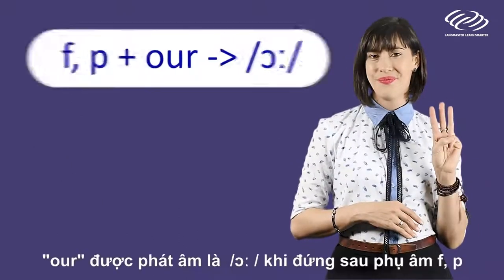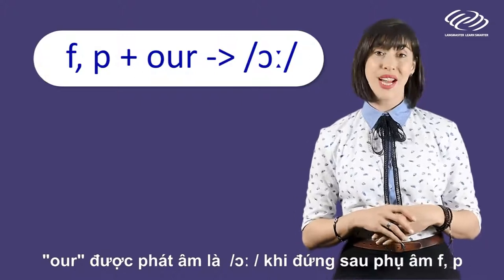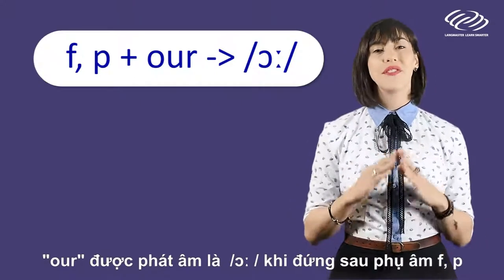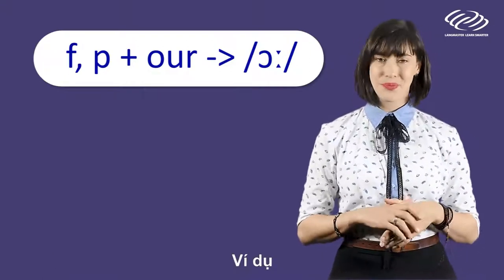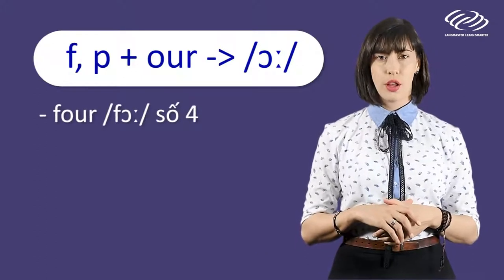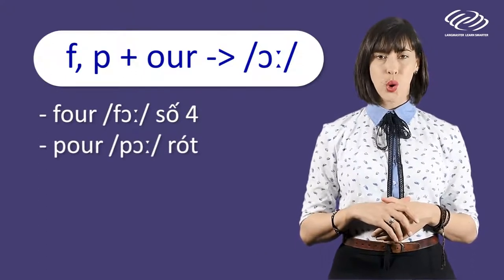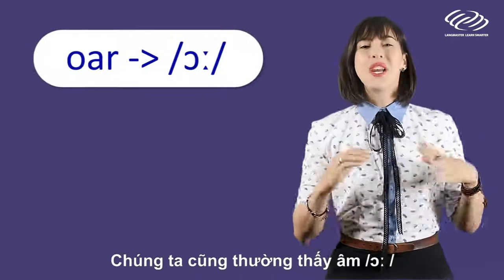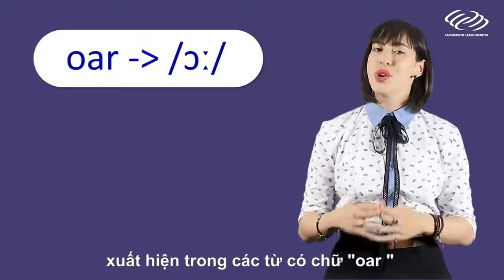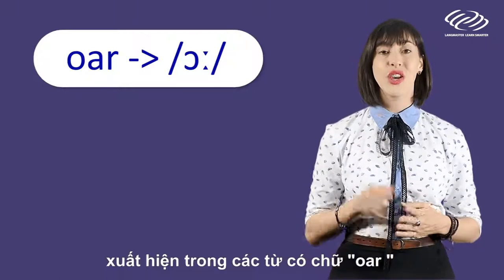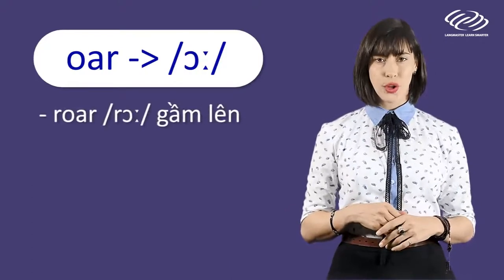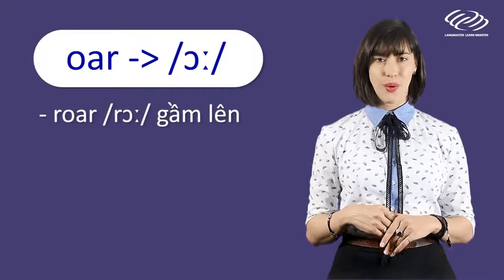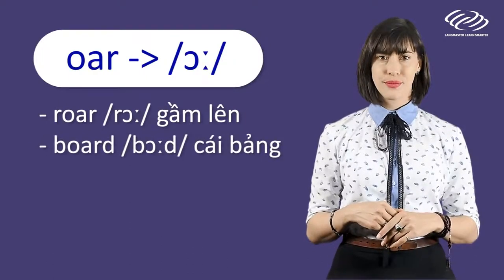Number three: O-U-R is pronounced as OR when it comes after the consonant F or P. For example: four, poor. And number four: we can also hear OR in words which contain the letters O, A and R. For example: roar, boar, board.